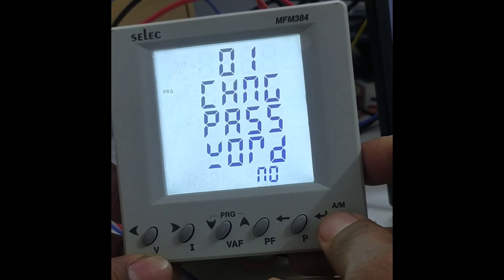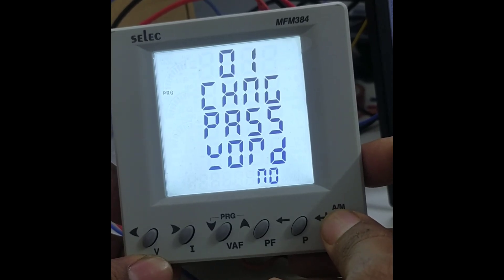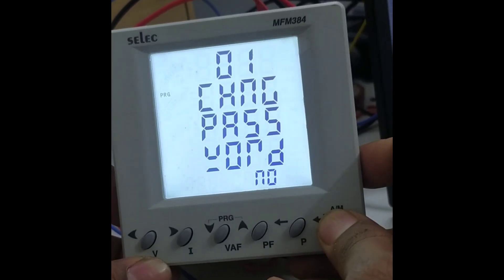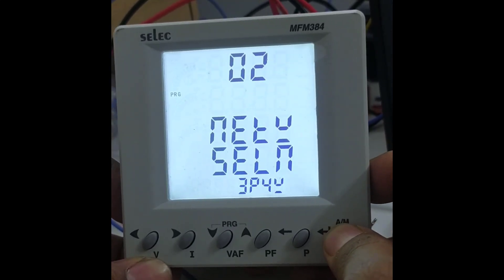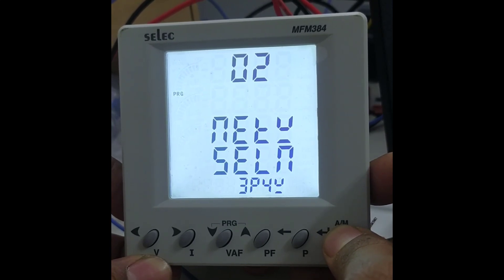Screen number one, change password, appears. If you don't want to change it, press enter again. The next screen is network selection. Three phase forward has been selected. Press enter.